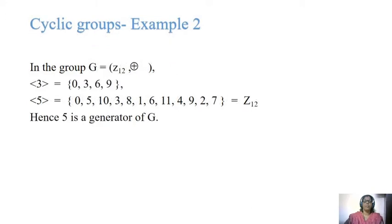Another example: Z₁₂ under addition modulo 12. Here 3 is a generator. Starting with 0: 0 plus 3 is 3, 3 plus 3 is 6, 6 plus 3 is 9, and continuing we generate the subgroup. Here 3 is the generator. Similarly, 5 is also a generator. Starting: 0 plus 5 is 5, 5 plus 5 is 10, 10 plus 5 is 15, but modulo 12 the remainder is 3.